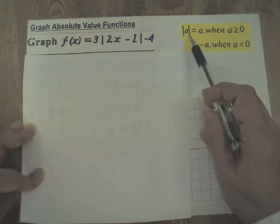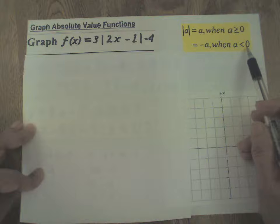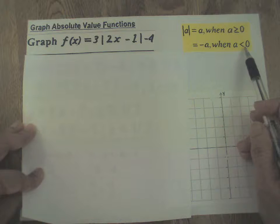And absolute value of 2x - 1 is the opposite of 2x - 1 when 2x - 1 is less than 0, i.e., when x is less than 1/2.